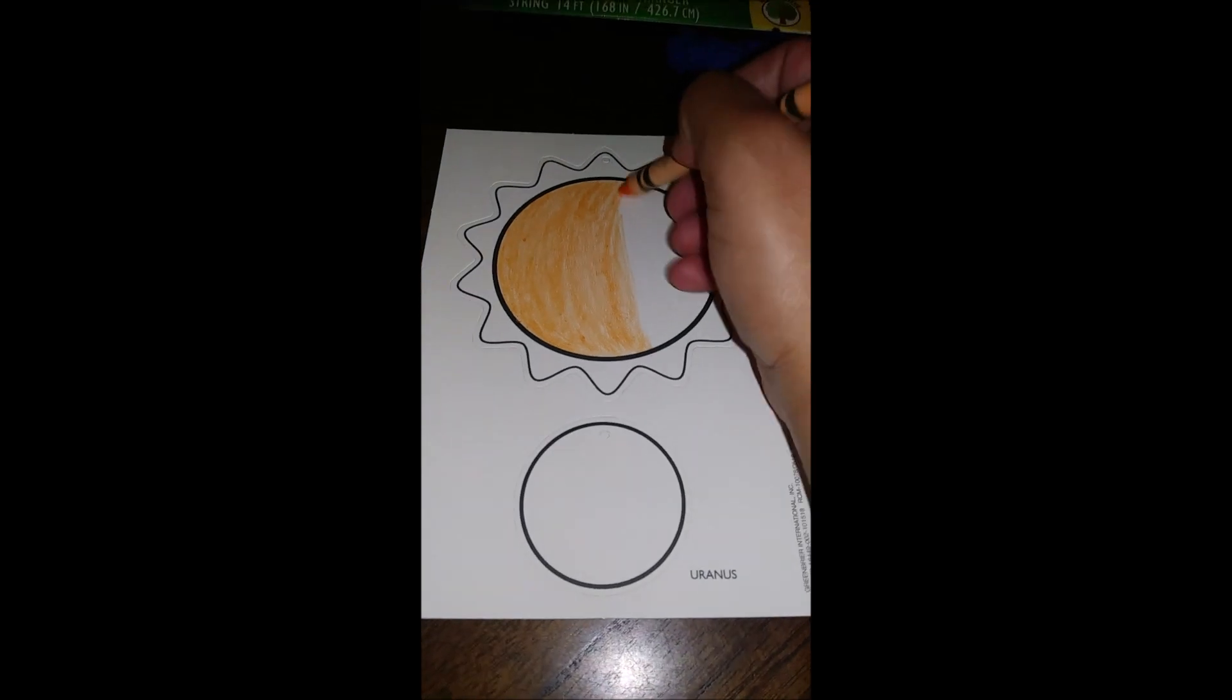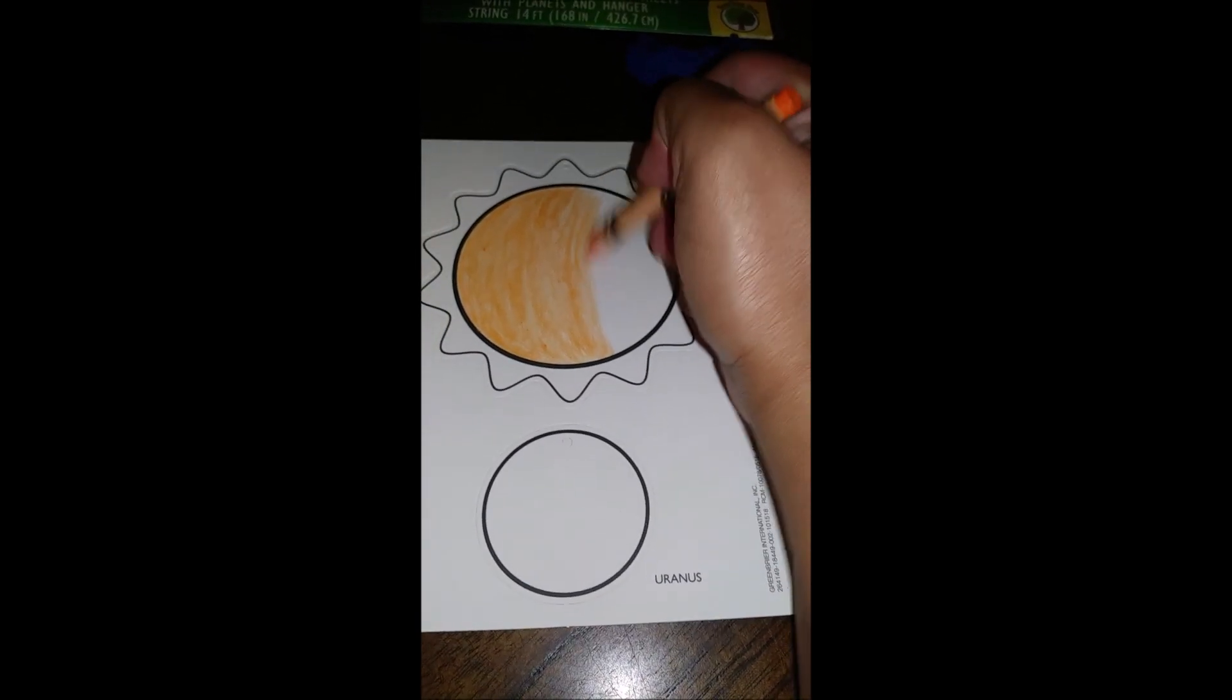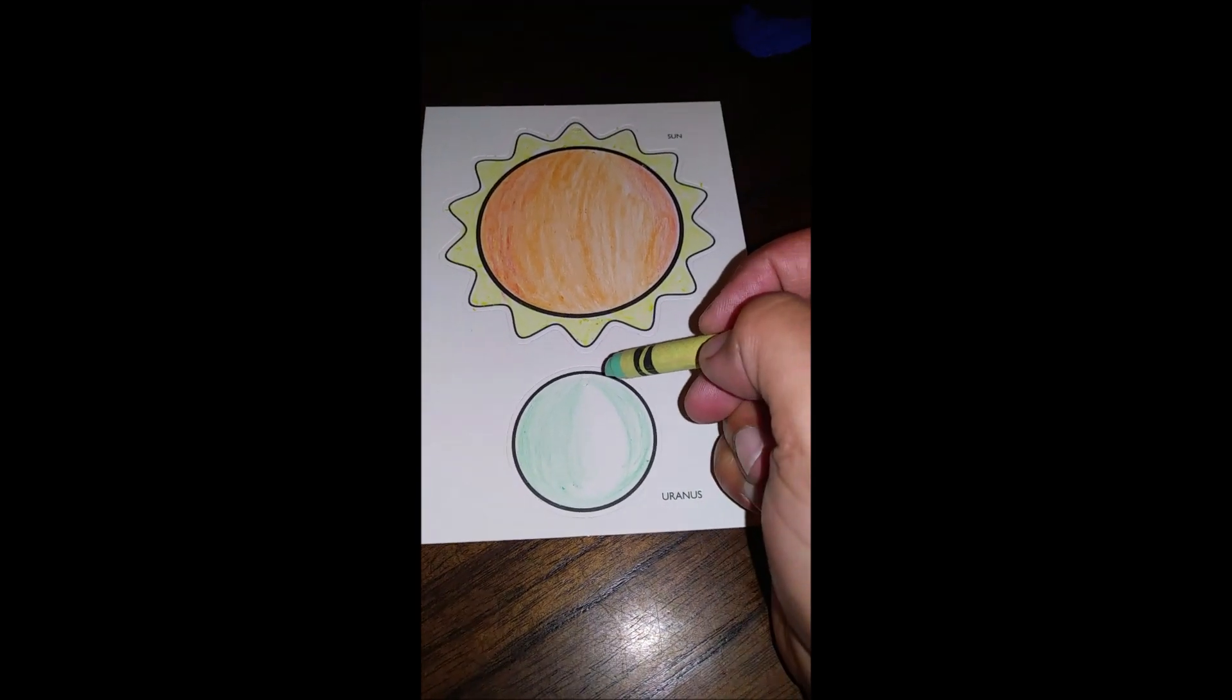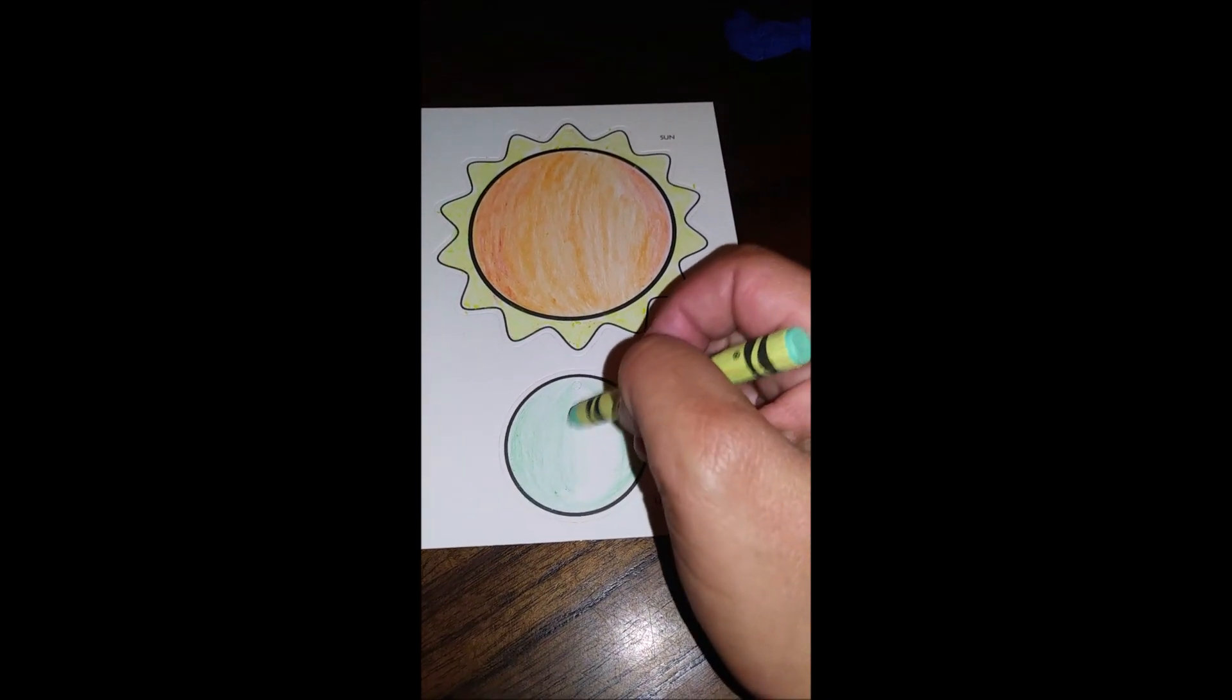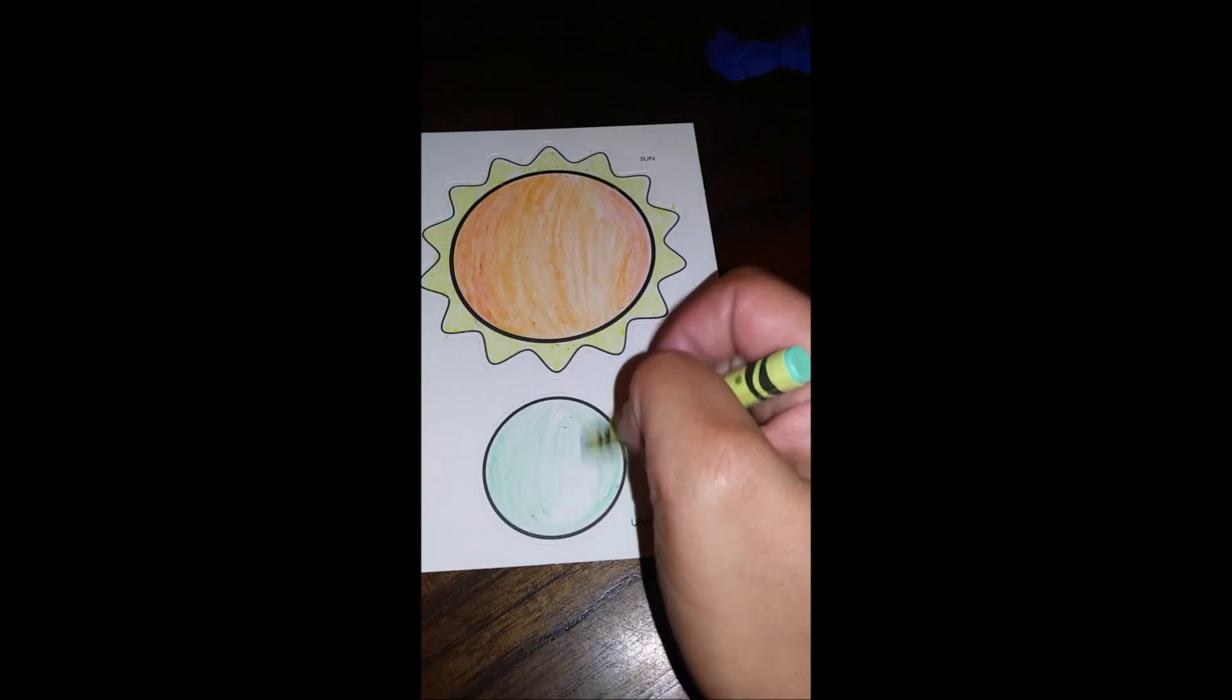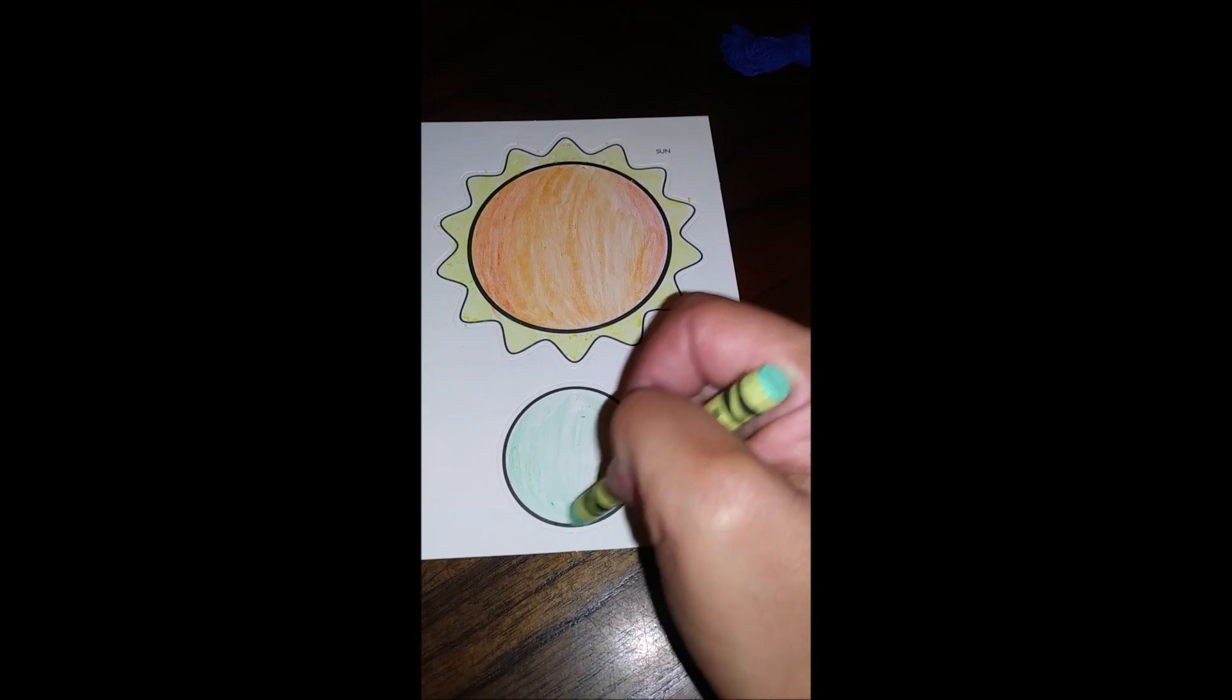For the sun, I'm going to use an orange color. Maybe a little red and yellow, too. Okay, now I'm going to color Uranus, and I'm going to use like a greenish color. I've never been to outer space, so I've decided to use fun colors.